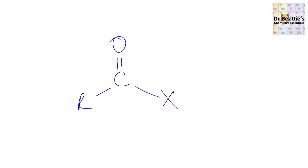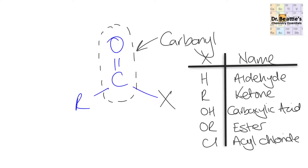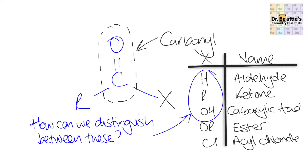Next, we focus on chemical tests containing the carbonyl group. The carbonyl group is ubiquitous in chemistry — many functional groups contain it, differing only in their X group. Examples include: hydrogen (aldehyde), an alkyl R group (ketone), OH (carboxylic acid), ester, and acyl chloride. We're going to focus on testing the top three: aldehyde, ketone, and carboxylic acid — and the question is how can we distinguish between them?